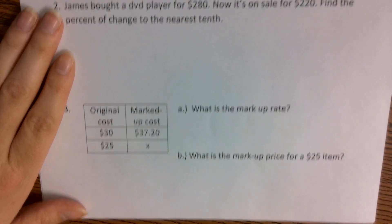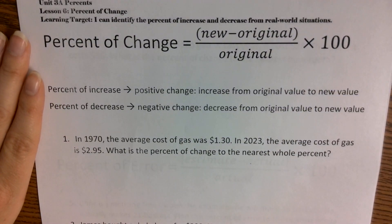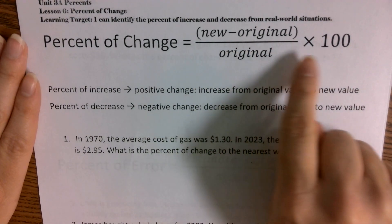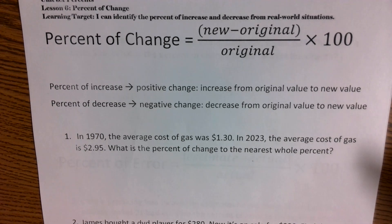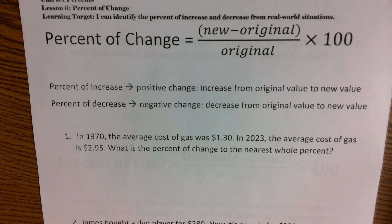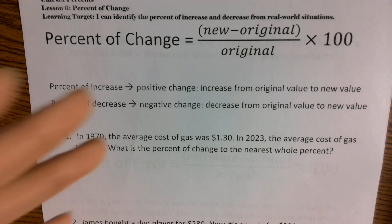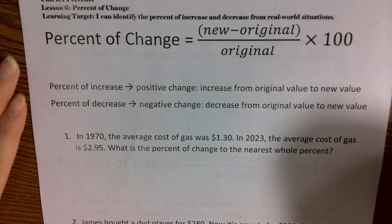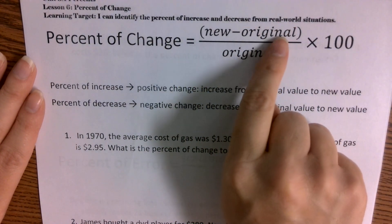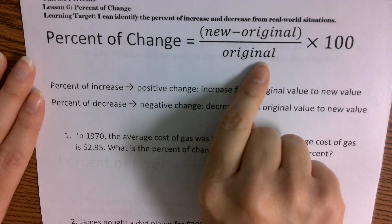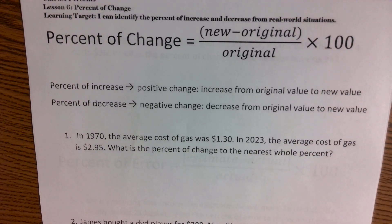Percent of change. We have new minus original, divided by original, times 100. This is the process of finding the percent of change. For example, if your first test score was 80 and after corrections you went up to 95, I want to know the percent of increase from your original score to your new score. You take your newest value, subtract your original, divide that difference by the original, and multiply by 100 to convert it into a percentage.